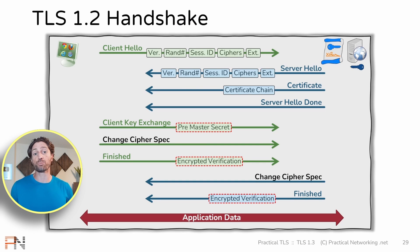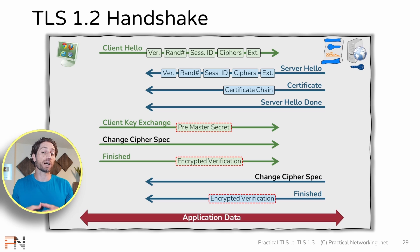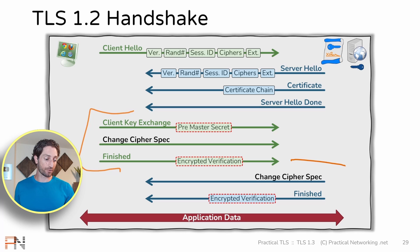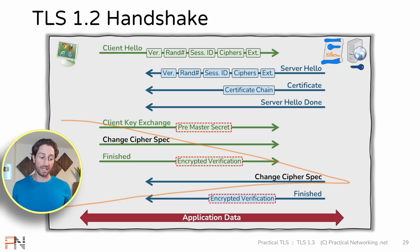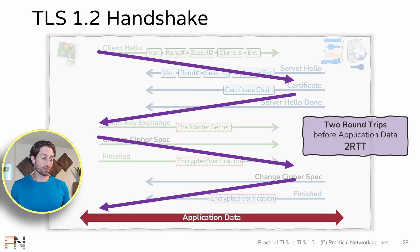Here is the TLS 1.2 and prior handshake. Back in module 6 of the Practical TLS course, we uncovered all the details about this handshake — what each of these messages were and the contents they included. What I want to focus on here is how many round trips this handshake actually takes. The client sends its client hello, then the server sends three messages — that's the first round trip. Then the client sends three messages and the server responds, concluding the second round trip. The TLS 1.2 handshake requires two round trips, referred to as a 2RTT handshake.